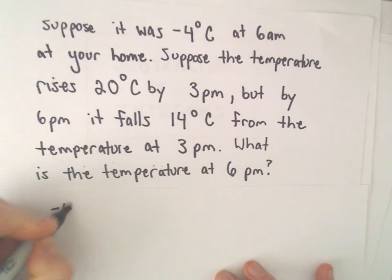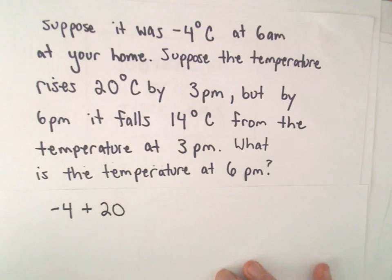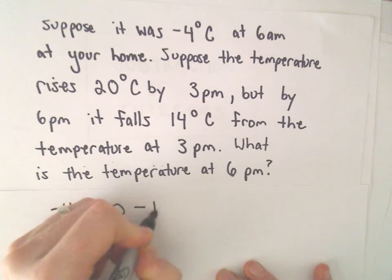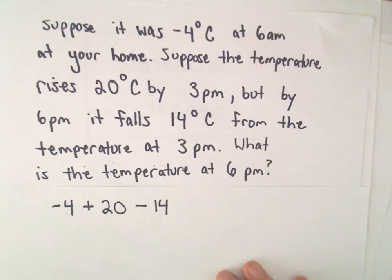So let's see, it was negative 4 degrees at the start of the day, or at least at 6 a.m. And then we would have to add 20 because we're going to increase the temperature by 20 degrees. But then we would have to subtract away 14 degrees because the temperature falls.